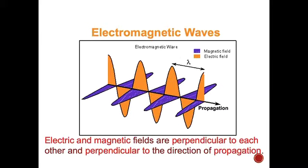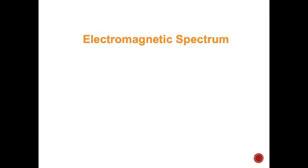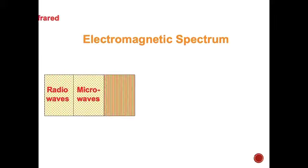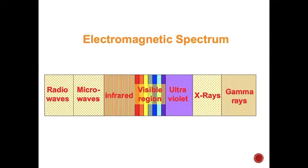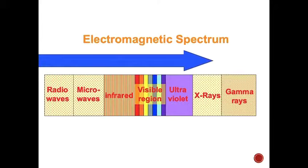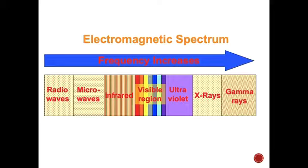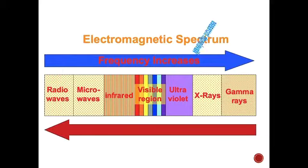The electromagnetic radiation or spectrum can be divided into: radio waves, microwaves, infrared, the visible region, ultraviolet, X-rays, and gamma rays. Moving in this direction, the frequency increases — meaning radio waves have the least frequency while gamma rays have the highest frequency. Contrary, wavelength increases in the opposite direction, so gamma rays have the lowest wavelength and radio waves have the highest wavelength.